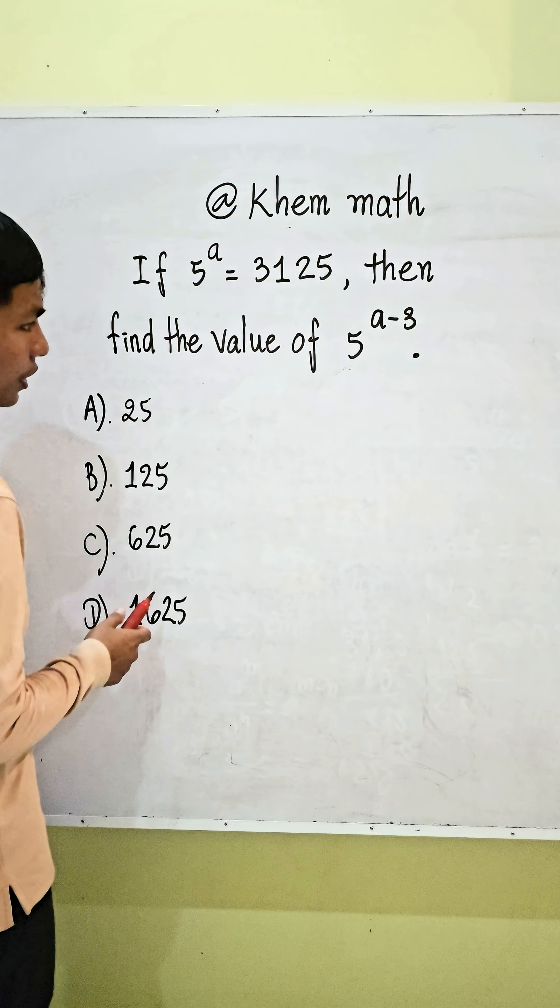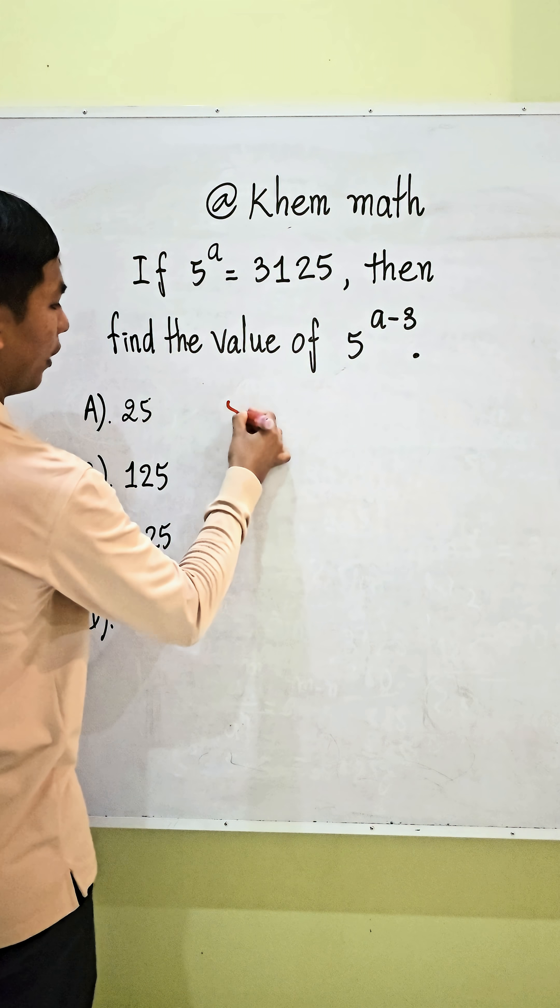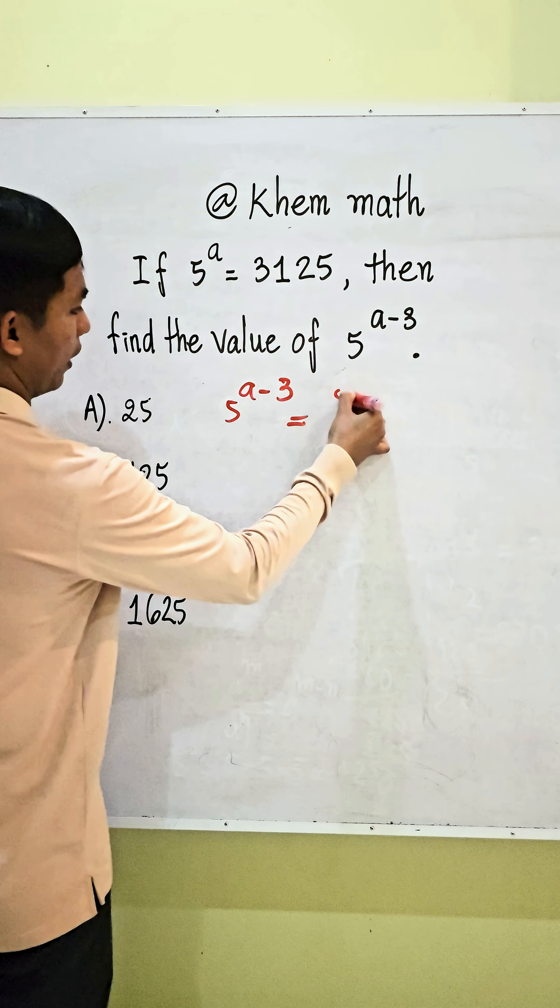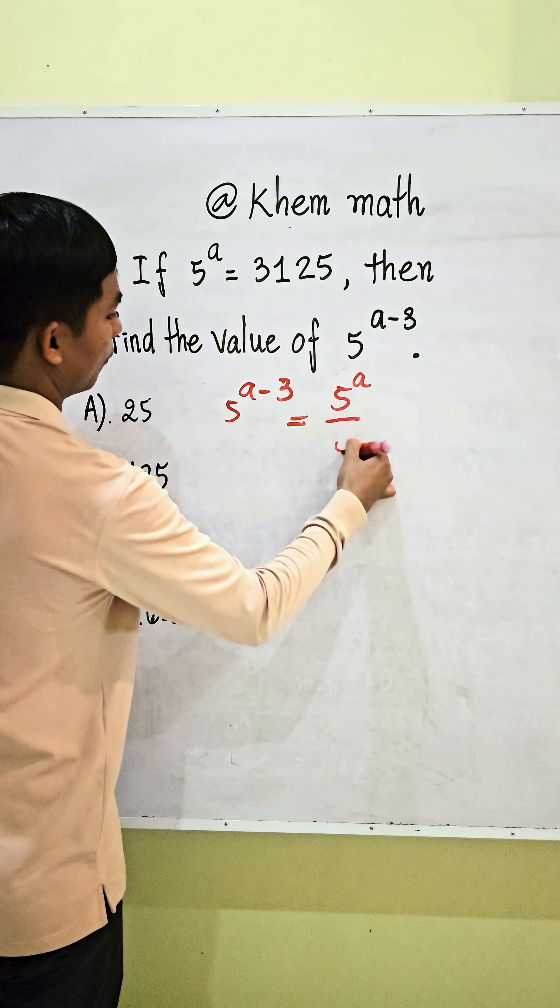Okay, look at our solution. Here, we have 5 power A minus 3. So we write it as 5 power A divided by 5 power 3.